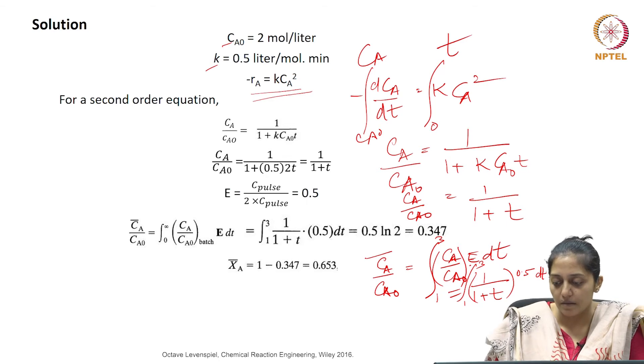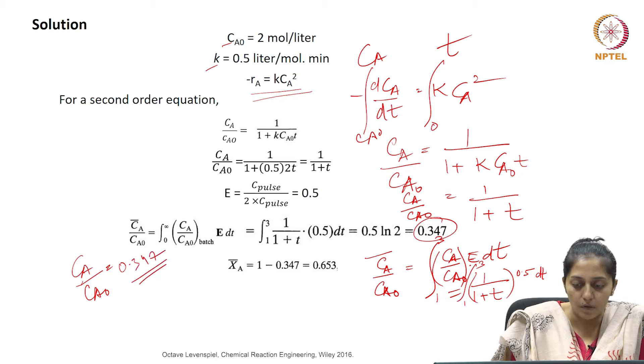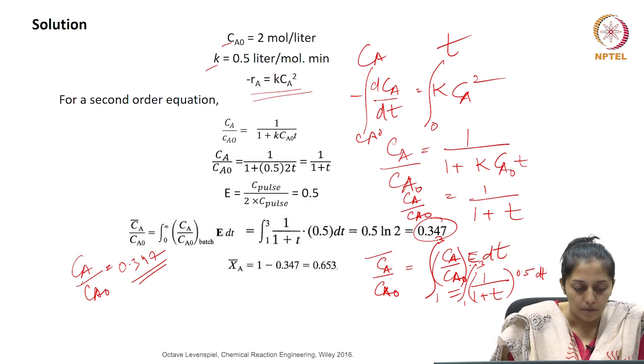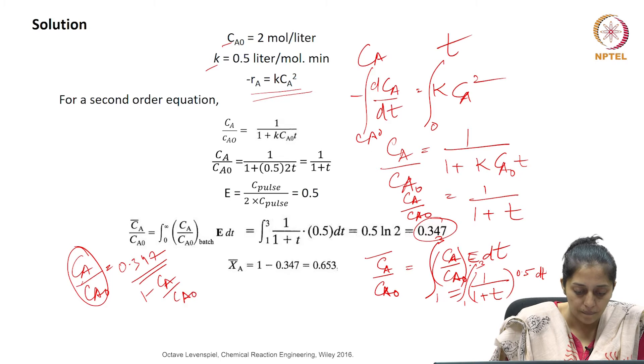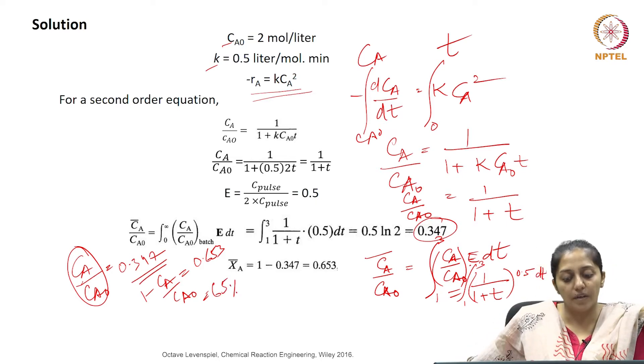If we solve this, we will find that the actual Ca by Ca naught fraction comes out to be 0.347. The actual conversion can be given as 1 minus Ca by Ca naught, which equals 0.653, and in percentage it becomes nearly 65 percent conversion due to the non-ideality.